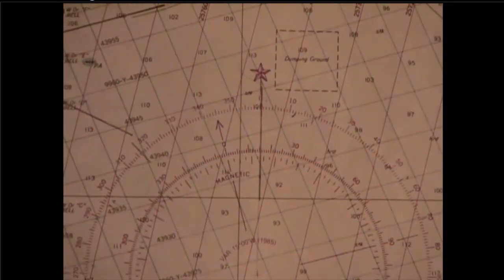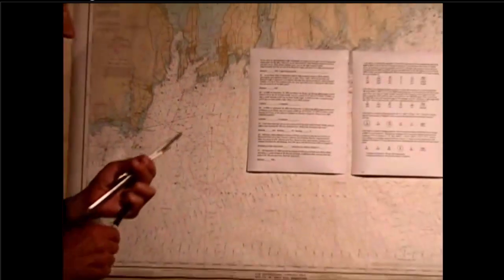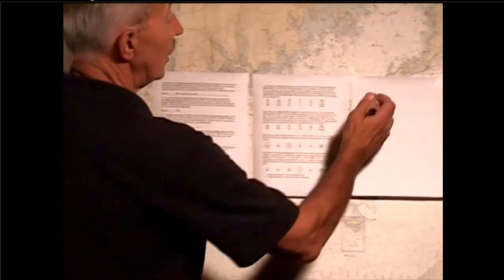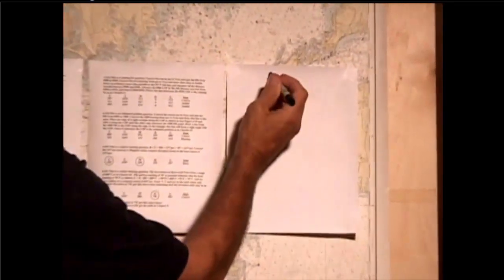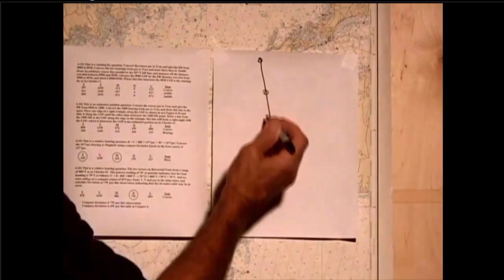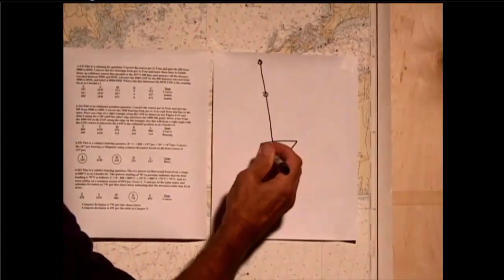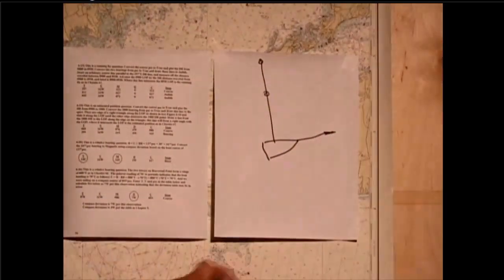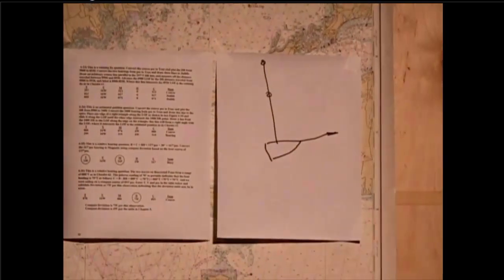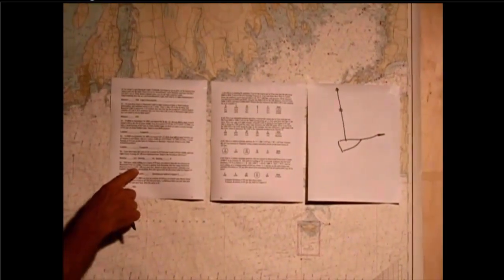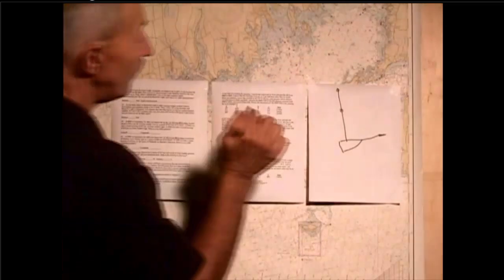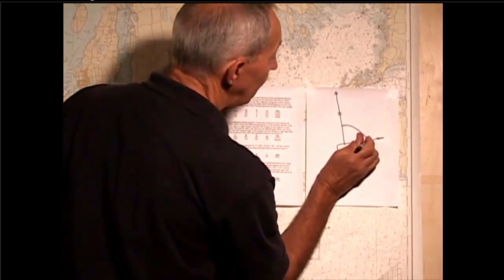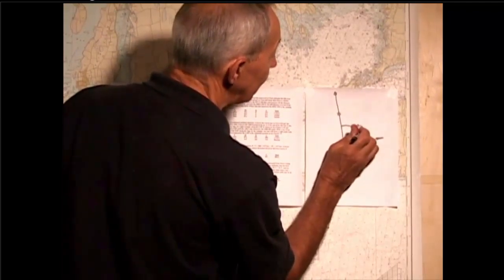Now let's look at the situation that we have. The boat is heading east at 93 degrees PSC. We have this range between those two towers, and the boat is heading somewhat like this. The problem said that this range was 70 degrees off our port bow — that means that this angle from here to here is 70 degrees.